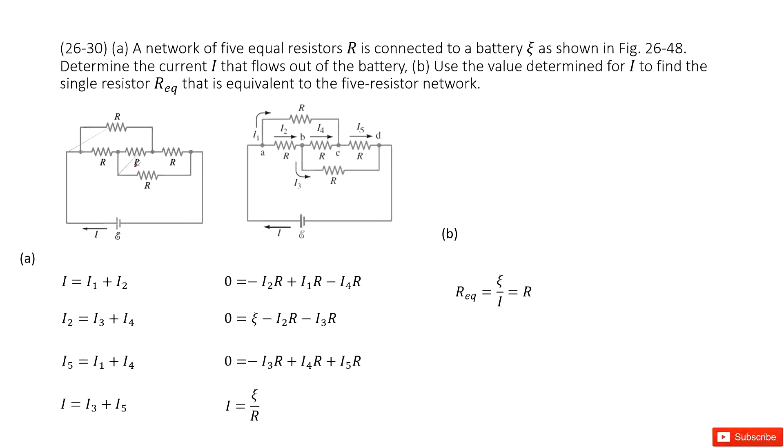We can see we have this circuit. It looks a little bit difficult, right? It's a network of five equal resistors R connected to a battery epsilon. We need to determine the current I that flows out of battery.